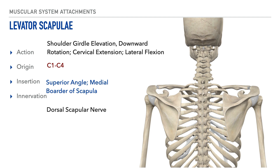Next let's take a look at the levator scapulae. Its actions include shoulder girdle elevation and downward rotation, along with both cervical extension and cervical lateral flexion. Its origin is located from the C1 to the C4 vertebrae, specifically at the transverse processes. Its insertion is on the superior angle of the scapula, and lastly its innervation is the dorsal scapular nerve.